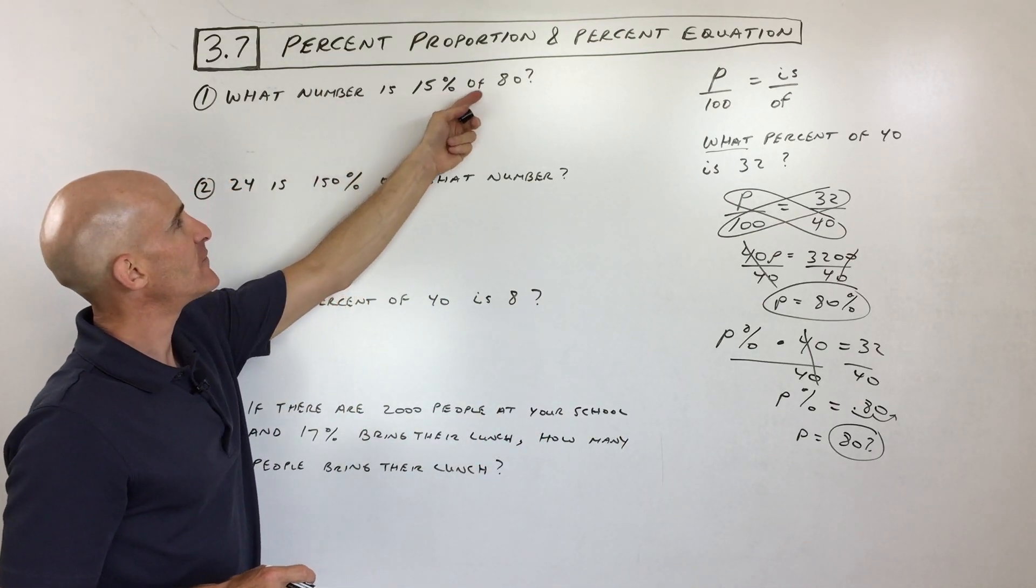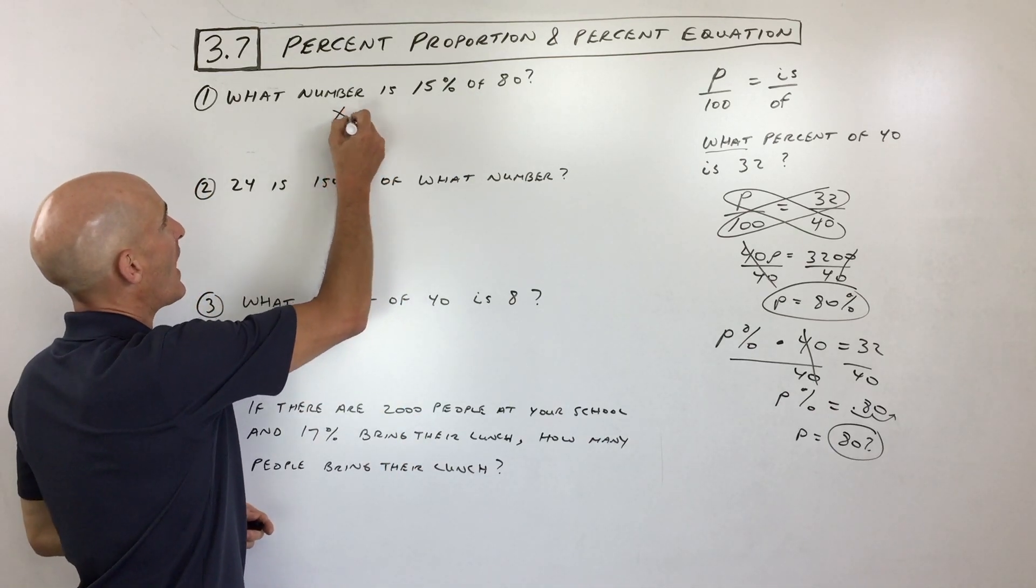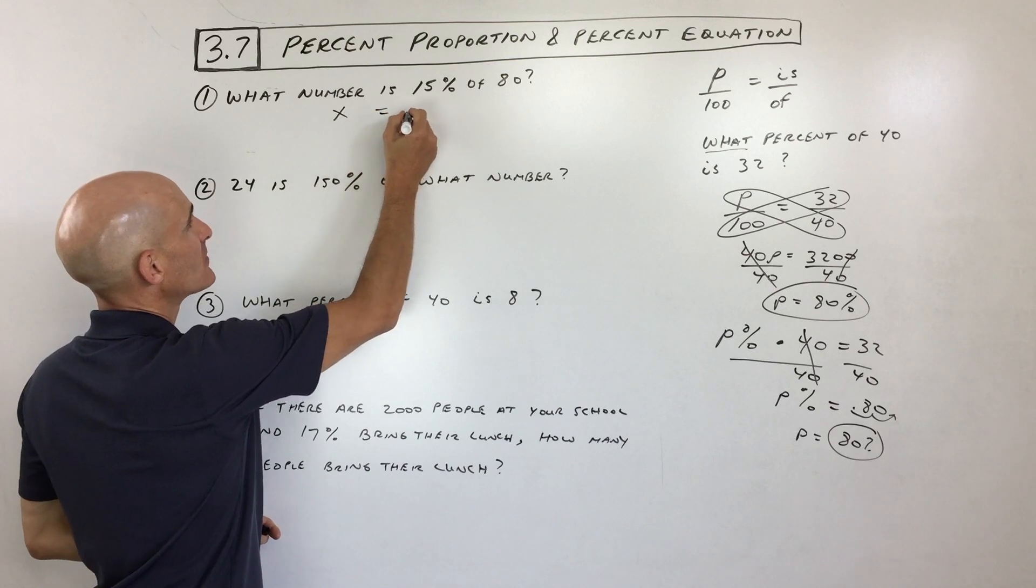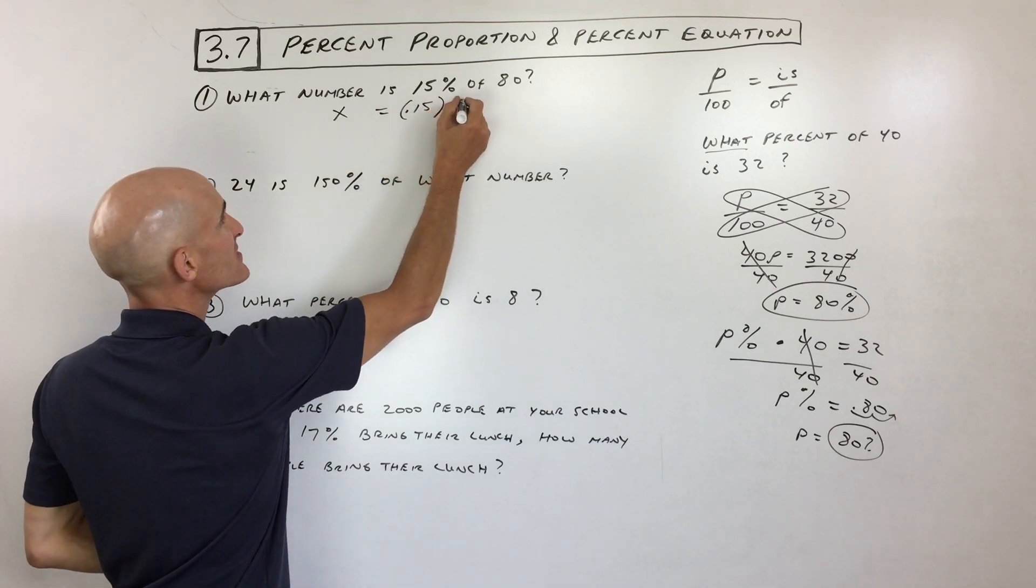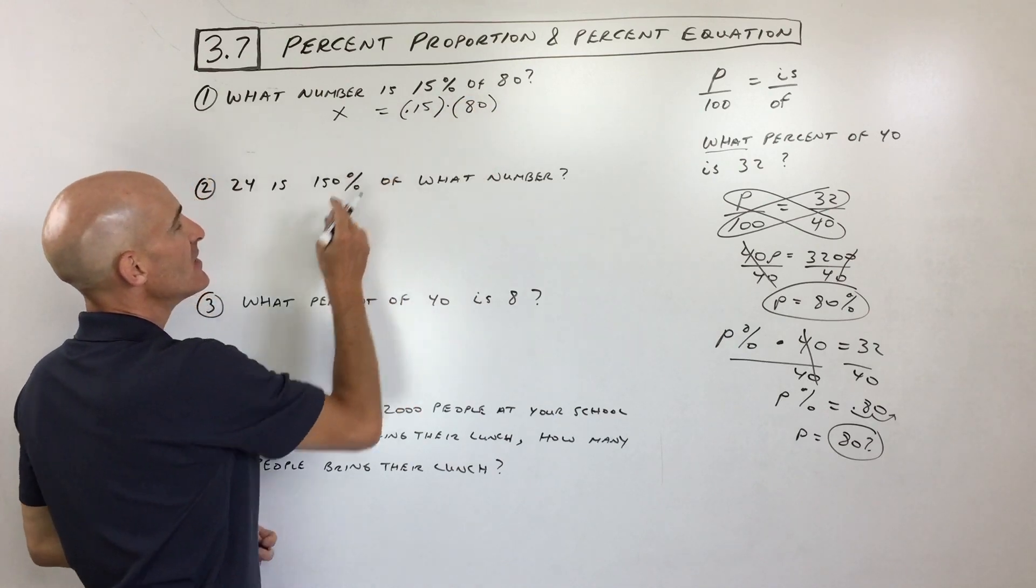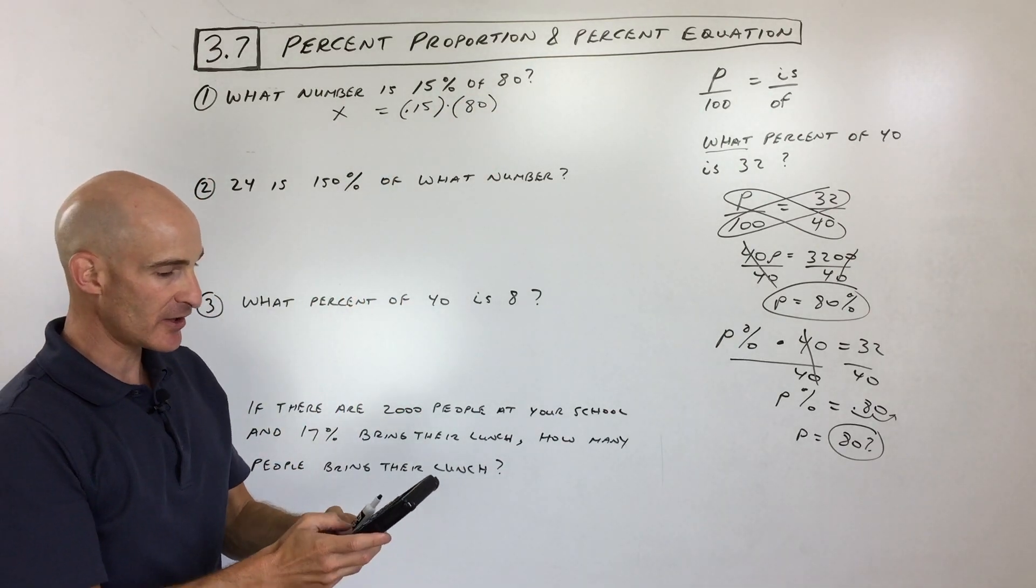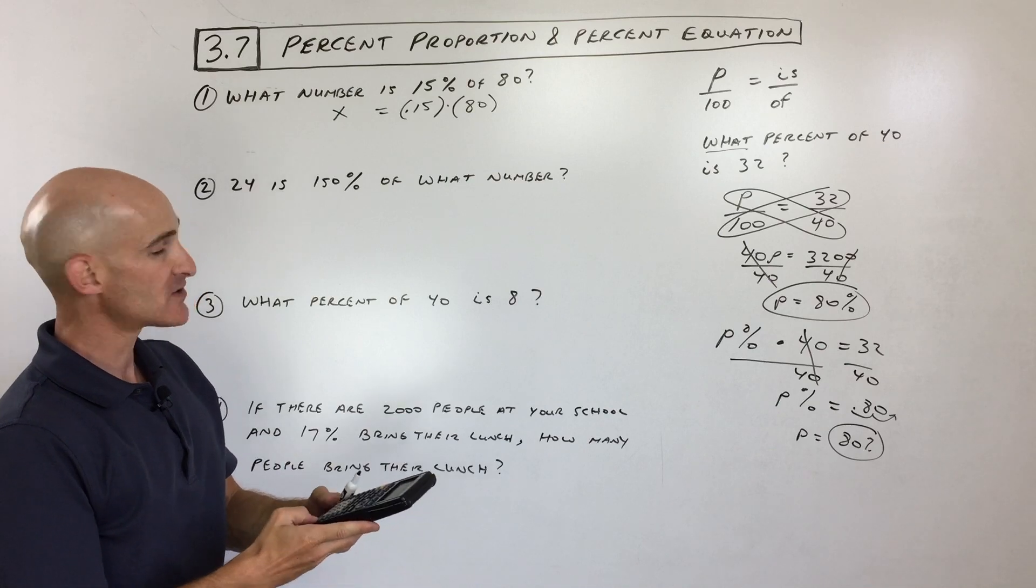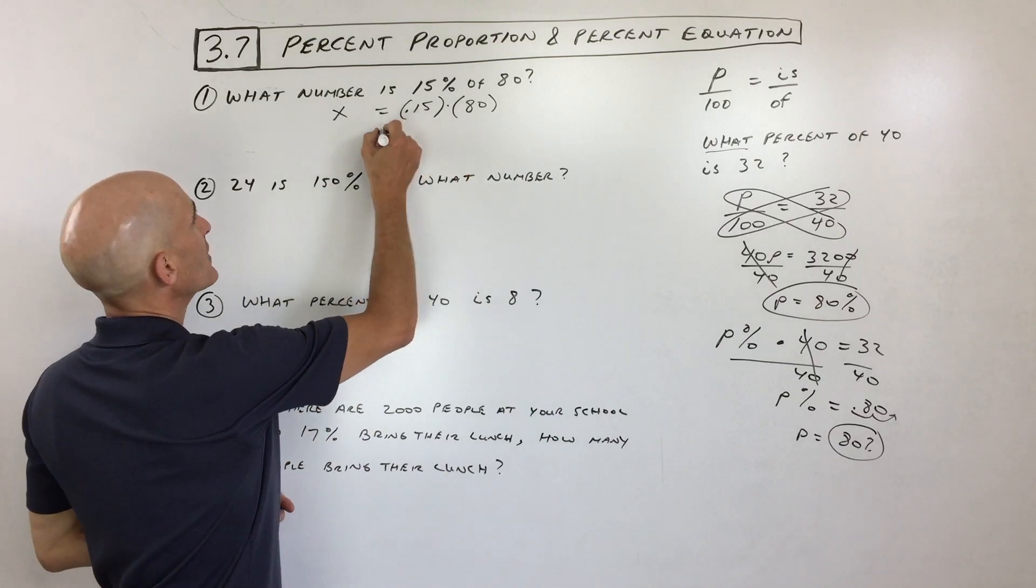So what number is 15% of 80? Okay, that's a good question. So what number? X equals 15%. I'm converting that into a decimal. Of, remember, means times 80. So we just have 0.15 times 80, which is how much? Well, we can do that on the calculator. I'll just multiply that out here for us. So that comes out to 12. Okay, so we'll just write 12.